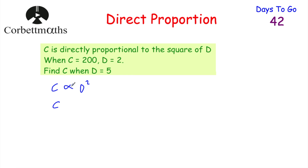So instead of the proportion symbol, we're going to write equals, and then we've got K multiplied by D squared. So we've got C is equal to K multiplied by D squared. We've got rid of the proportion symbol and replaced it with K, the constant of proportionality, multiplied by D squared. We're told that whenever C is equal to 200, D is equal to 2, and we've been asked to find C whenever D is equal to 5. We can substitute these values in to find the value for K, and once we know that, we know the formula linking C and D.